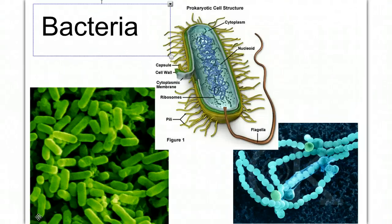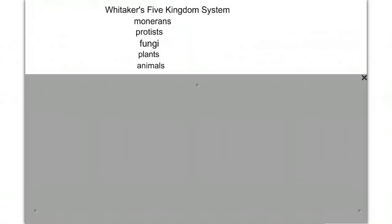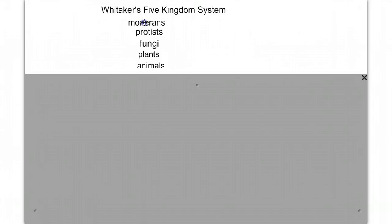In this video, we're going to talk about all things bacteria. Before we can get into bacteria, we need to remind ourselves about how we group and classify living organisms. In Whitaker's Five Kingdoms system, all the bacteria were included in the kingdom Monera. The thing that distinguished the Monerans is that they were prokaryotic — cells that lacked a nucleus.